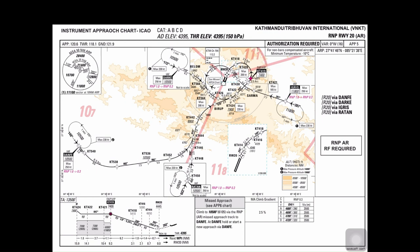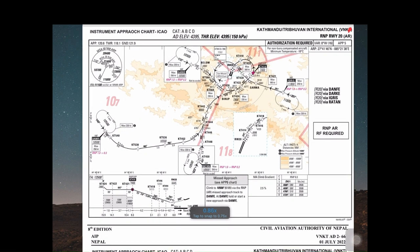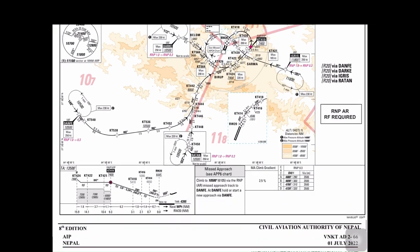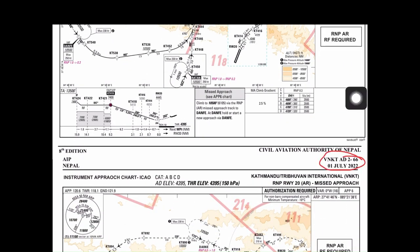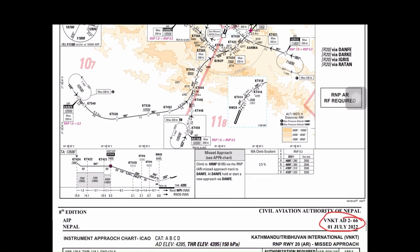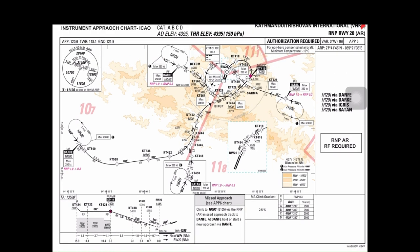We have to start briefing from the topmost part of the chart. We start with the date of issue. For the second plate, the date is July 1, 2022 — the most recent version. So we start with the validity date: July 1, 2022 — Kathmandu Required Navigation Performance approach for runway 20 arrival. It's an instrument approach chart with an aerodrome elevation of 4,395 feet, threshold elevation of 4,395 feet, at a pressure of 150 hectopascals.